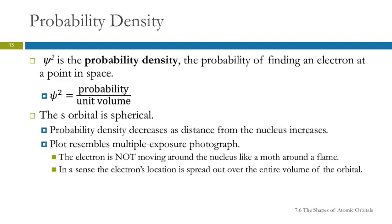The s orbital is spherical, so that's kind of nice - s and spherical. The probability density decreases as the distance from the nucleus increases. And so we could make a plot that's like a multiple exposure photograph.